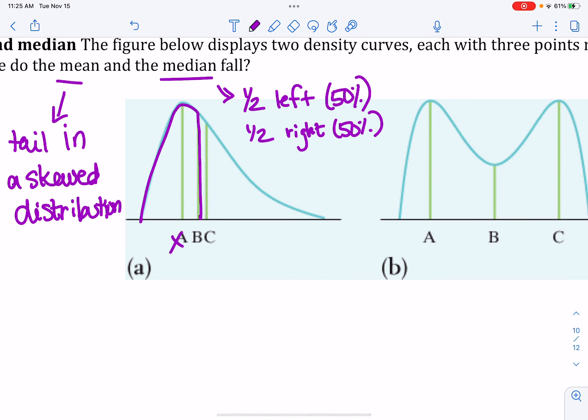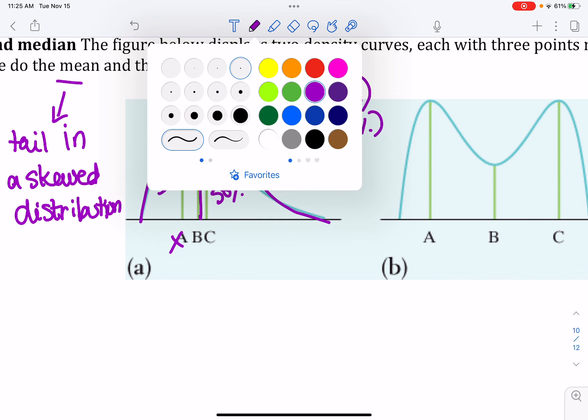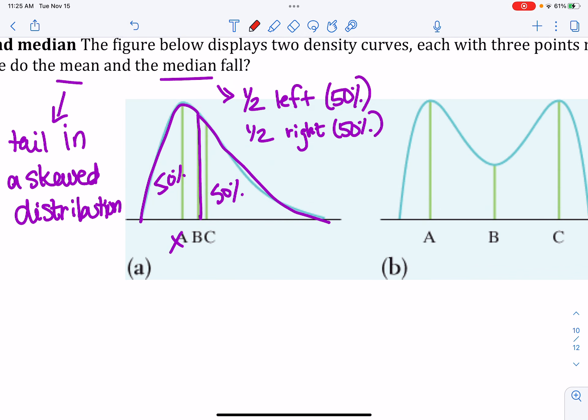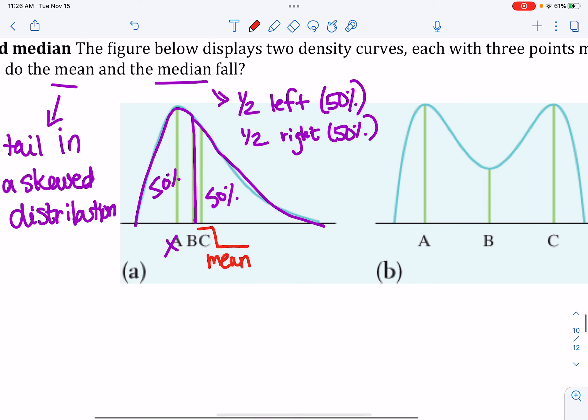So then I look at B. So B, you've got this peak over here, and this one does appear to be about 50-50, or at least closer to it. And because I know that in a right skewed distribution, mean has to be bigger than the median, the mean has to be C, and that means that the median has to be B.